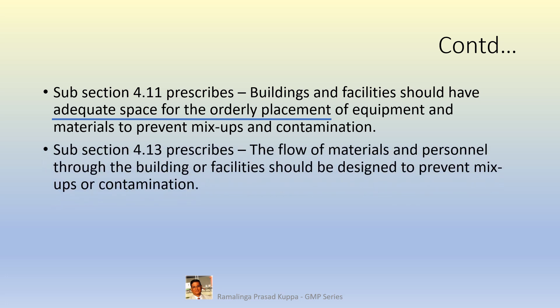Subsection 4.13 prescribes the flow of materials and personnel through the buildings and facilities should be designed to prevent mix-ups and contamination. Flow of men and materials in and out of each stage should be handled carefully to avoid contamination. It is a general industry practice to have separate entry and exit facilities for men and materials. However, if an effective system can be maintained to avoid contamination, the same entry and exit systems may be used. If product output is transferred through a closed silo or conveyor to the next stage, common entry and exit can be justified for men and materials.